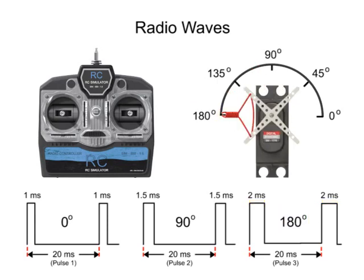The servo motor can be programmed to hold positions at any range of angles necessary to provide the precise control required to adjust the flaps. Varying the pulse width is all that is required to determine the position the servo motor will maintain.